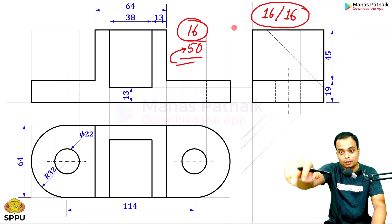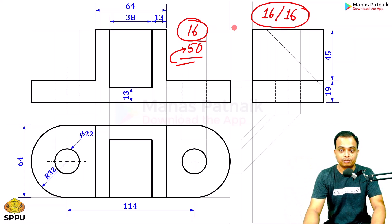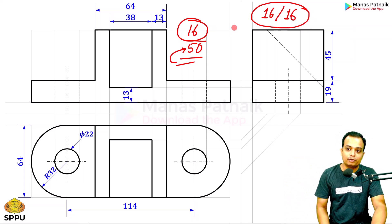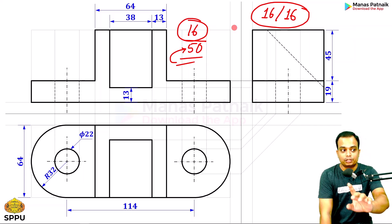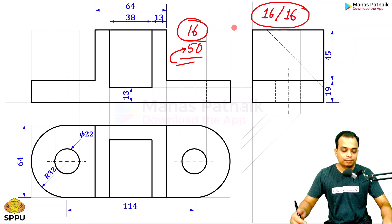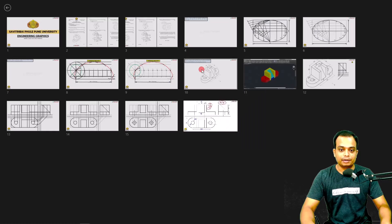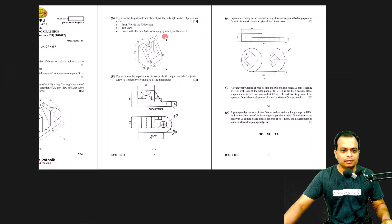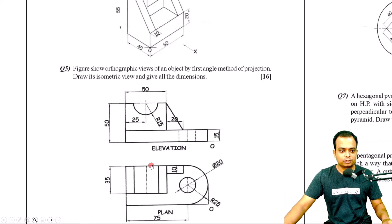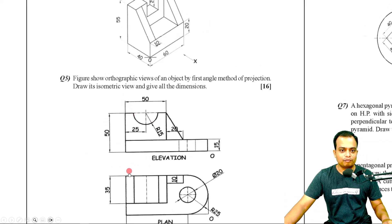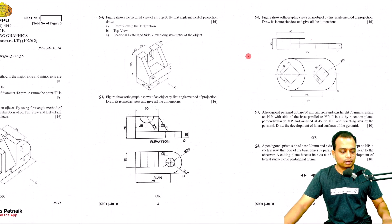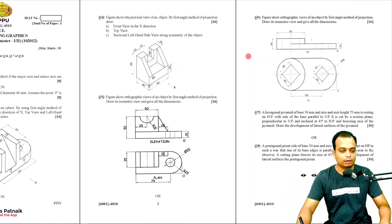This examination is 15 marks total, and this single question can give you 16 marks — so it is very profitable to solve questions on orthographic projection. In upcoming lectures, I'll be uploading a video on isometric projection as well, which also appears in the exam. There are two isometric problems — problem five and problem six — so plenty of things will be covered.